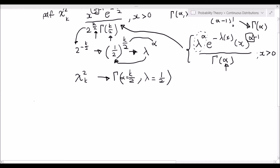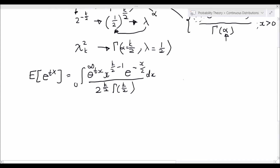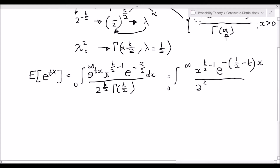The moment generating function is defined as the expected value of e to the tx, which we evaluate as the integral of e to the tx times x to the power of k over 2 minus 1, times e to the negative x over 2, all divided by 2 to the power of k over 2 times gamma of k over 2, dx. Multiplying the exponential functions together, we arrive at x to the power of k over 2 minus 1, times e to the power of negative one-half minus t, times x, with the same denominator.